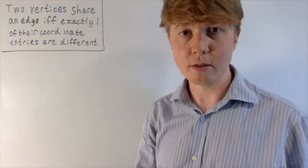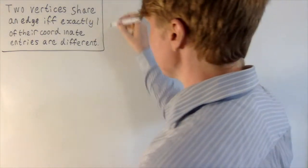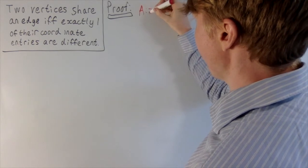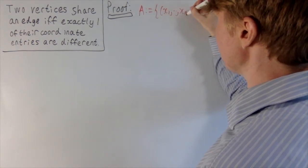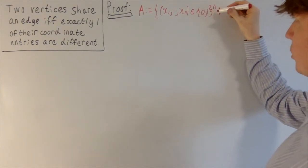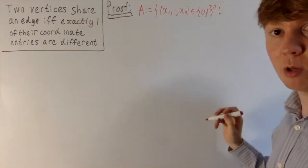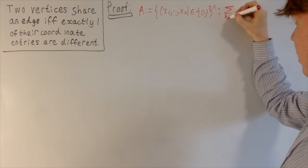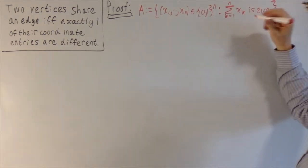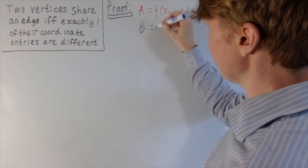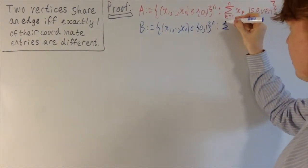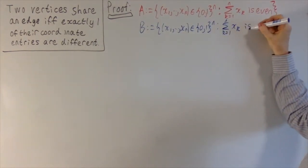Now we're ready to prove this for the n-dimensional hypercube graph more rigorously. The first thing we'll do is define our sets A and B. Set A is the set of all vertices in {0,1}^n such that the sum of their coordinate entries is even. Set B is the set of all vertices in the n-dimensional hypercube graph such that the sum of their coordinate entries is odd. This gives us a natural partition.